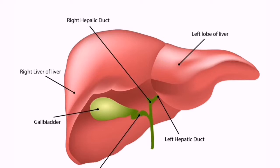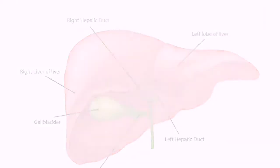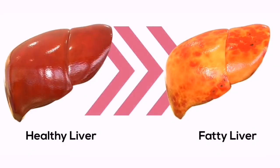The liver detoxifies chemicals and metabolizes drugs. As it does so, the liver secretes bile that ends up back in the intestines. The liver also makes proteins important for blood clotting and other functions.